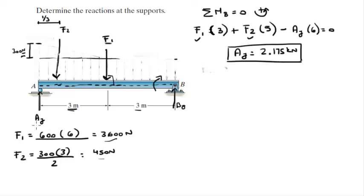And then to solve for BY, you can do simply the sum of the forces in the Y is equal to 0, assuming this orientation, of course, XY.